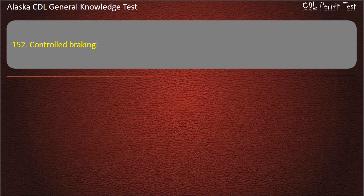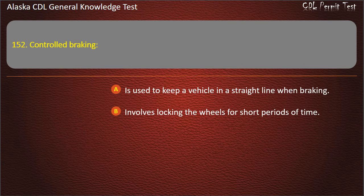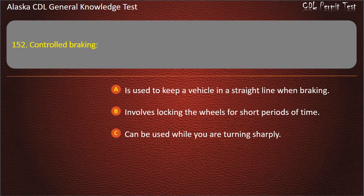Question 152. Controlled braking is used to keep a vehicle in a straight line when braking, involves locking the wheels for short periods of time, or can be used while you are turning sharply. Answer: Is used to keep a vehicle in a straight line when braking.